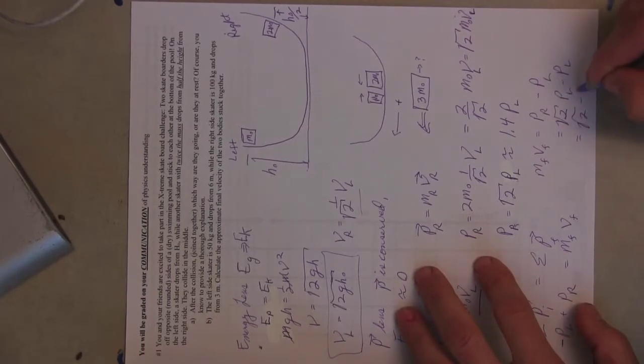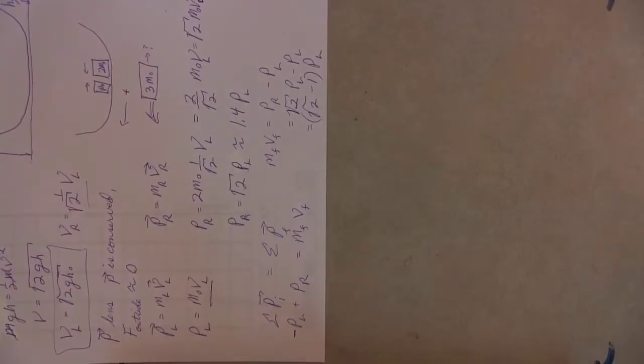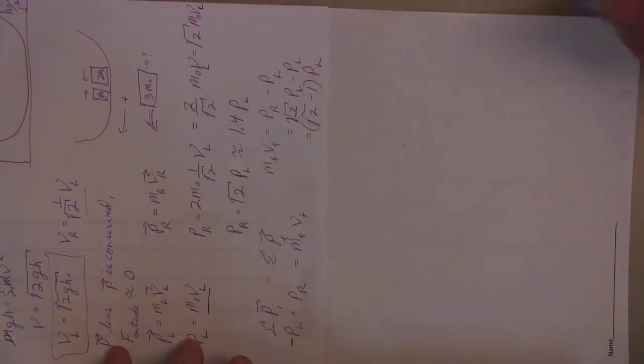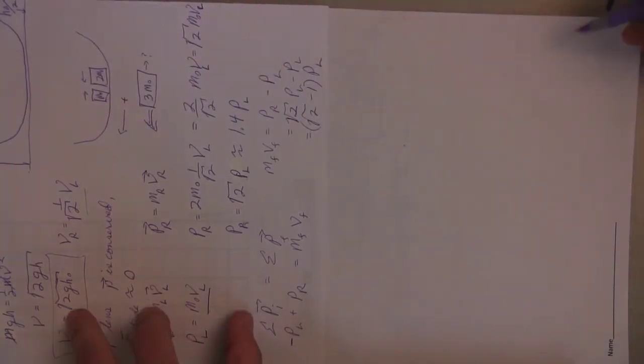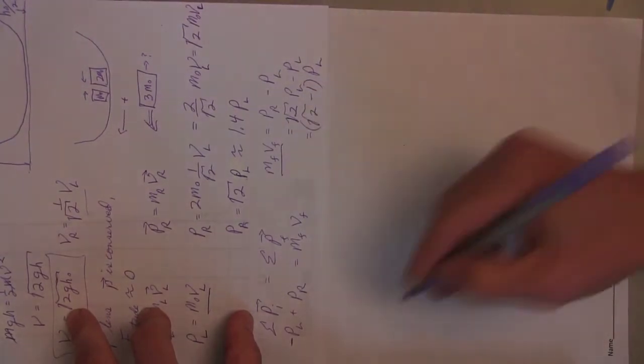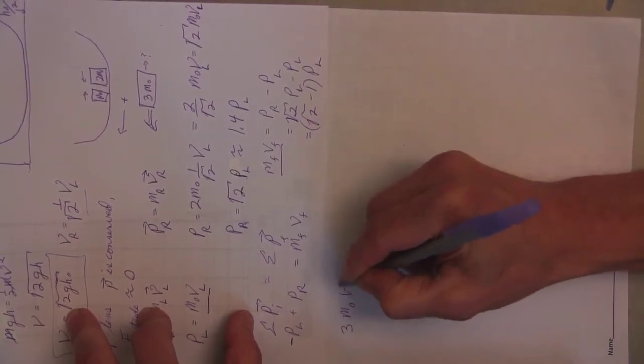which is square root 2 minus 1 times PL. Now I want you to notice I didn't put any numbers in. Was this a good idea? And I think it was because all of these calculations were very simple. And so now I'm ready to finish, and I can write, yeah, what is the final mass?